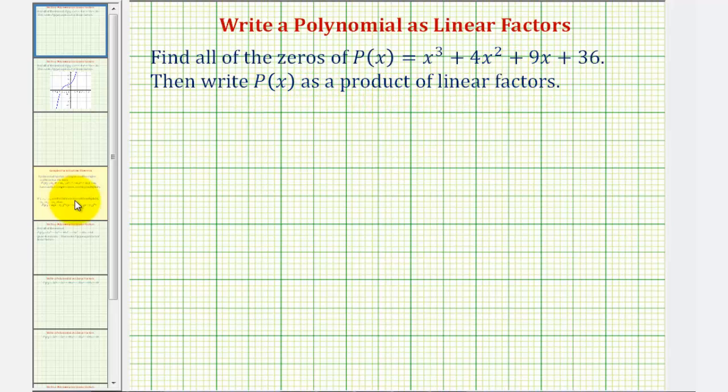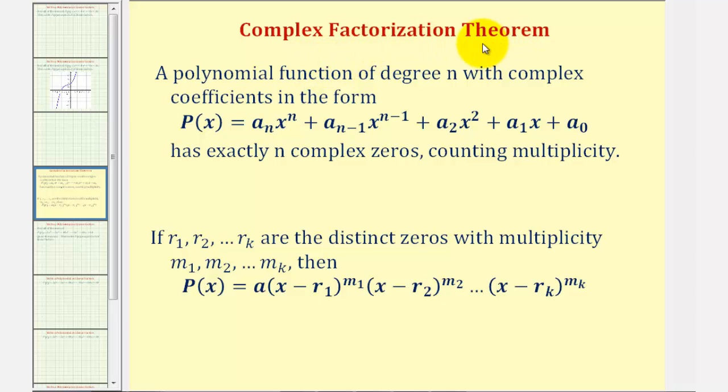So for a quick review, the complex factorization theorem states that if we have a polynomial of degree n, then there are exactly n complex zeros as long as we count multiplicity. So if we find all the complex zeros, then we can write the given polynomial function as a product of linear factors where the r's would be the zeros and the exponents m would be the multiplicity of each zero. Also notice that a would be the leading coefficient in this form.